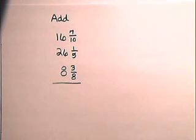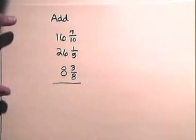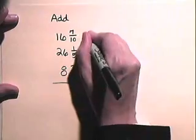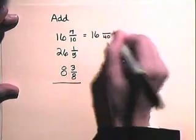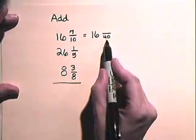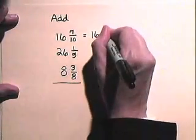You can see before we add these fractions, we're going to need to get a common denominator. The common denominator will be 40. So, 16 and 7 tenths will become 16 and with a denominator of 40, 10 goes into 40 four times. 4 times 7 is 28.